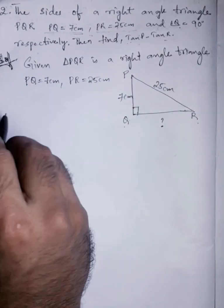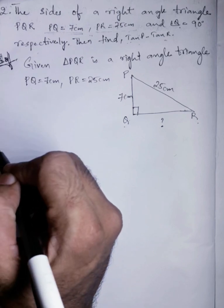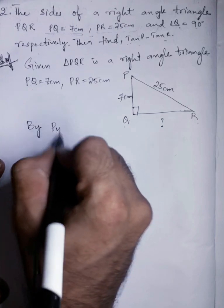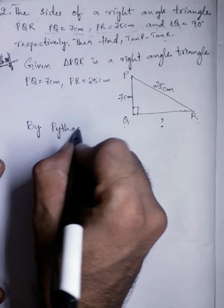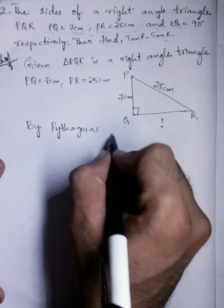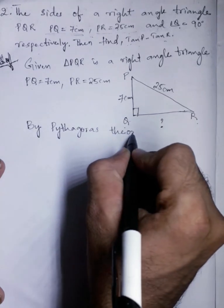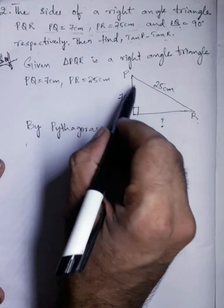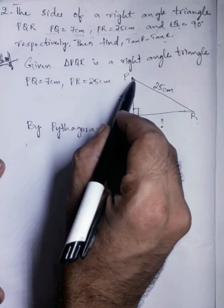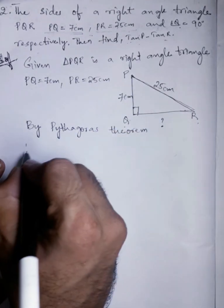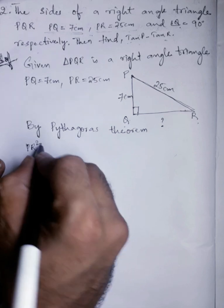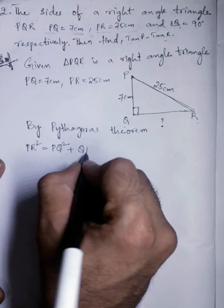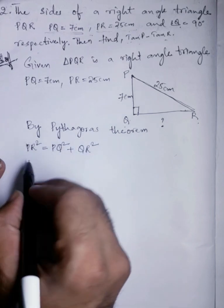To find the value of QR we will use Pythagoras theorem. According to Pythagoras theorem, we know that hypotenuse square, hypotenuse means the longest side, that is PR. Hypotenuse square equals opposite square plus adjacent square.